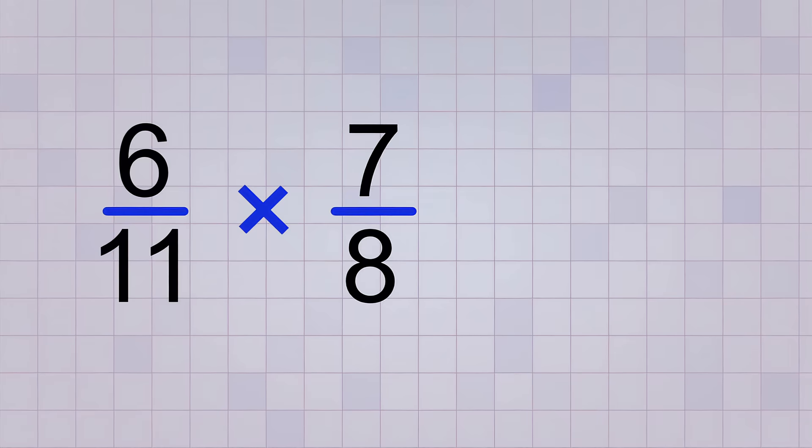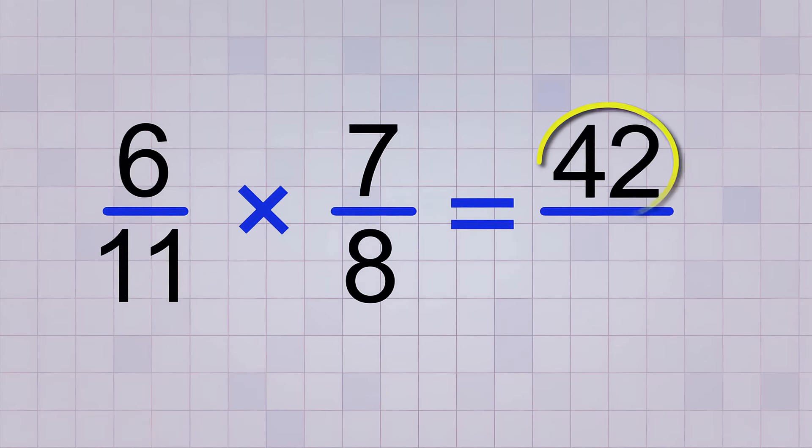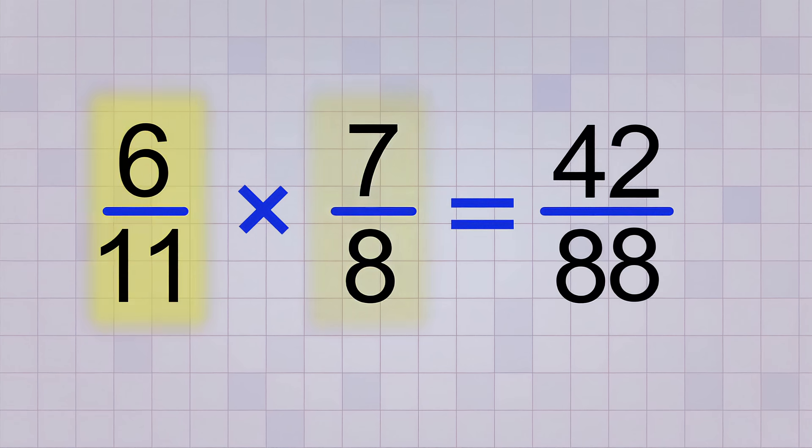From our multiplication table, we know that 6 times 7 equals 42. So 42 is the top number of our answer. And on the bottom, we have 11 times 8, which is 88. So 6 over 11 times 7 over 8 equals 42 over 88.